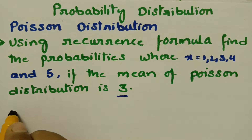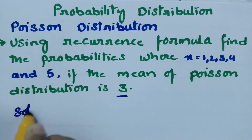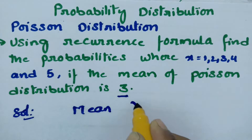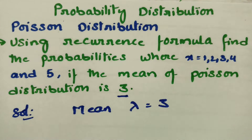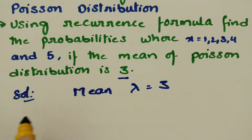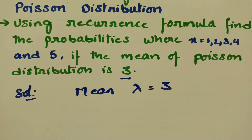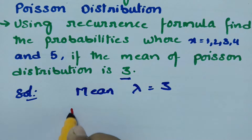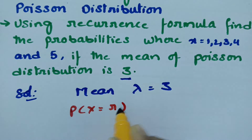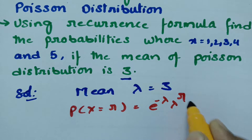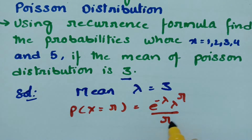The mean is nothing but lambda, so lambda is given as 3. According to the Poisson distribution, the probability that x equals r is given by: P(x = r) = e^(−λ) × λ^r / r!.